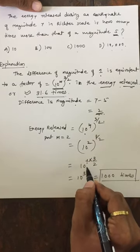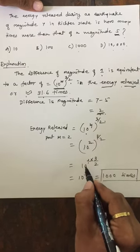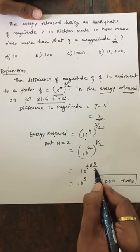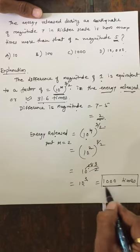Power to power means according to law of indices power come multiplication. So, 10 to the power 2 multiplied by 3 by 2. 2 to get cancelled. 10 to the power 3 means 1000 times.